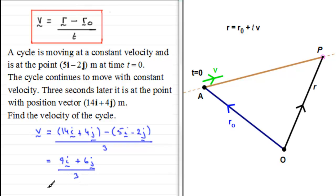So what we get now is a velocity, which is going to be 3i plus 2j. So we've got 3i plus 2j. And that's going to be meters per second.